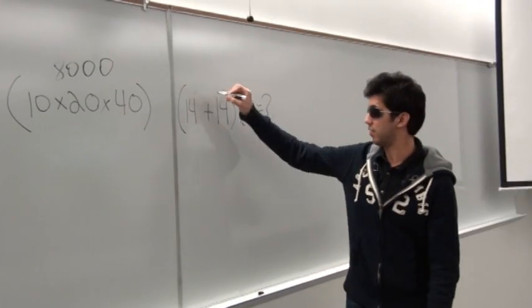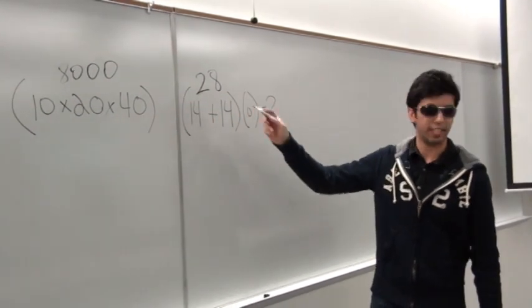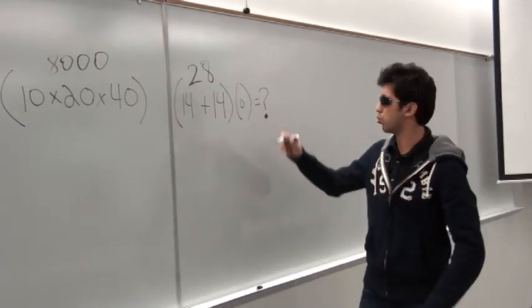Alright, 28. That's correct. Alright, so how much is 8,000 times 28? Don't even worry about it. It's 224,000.